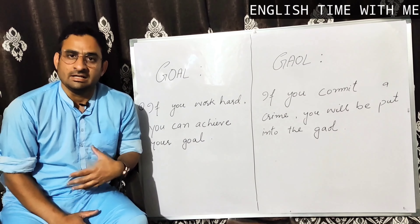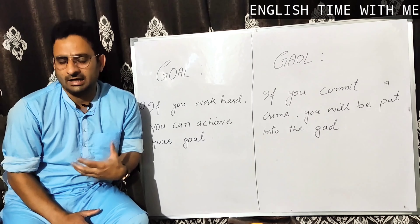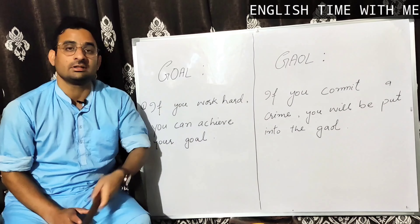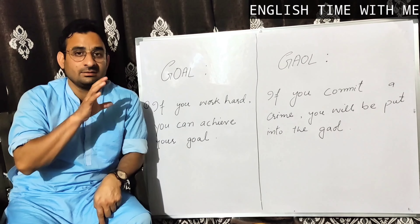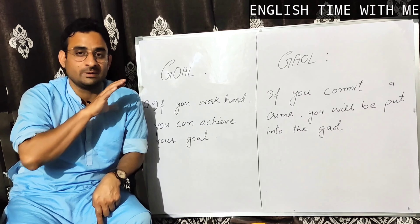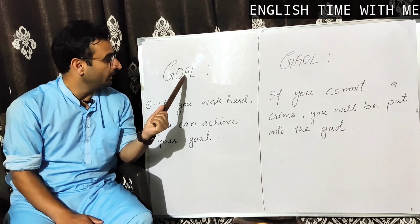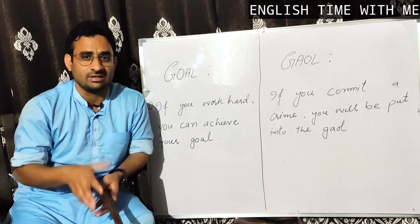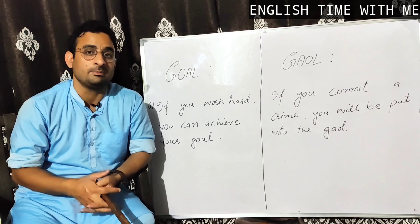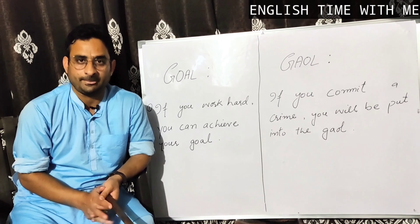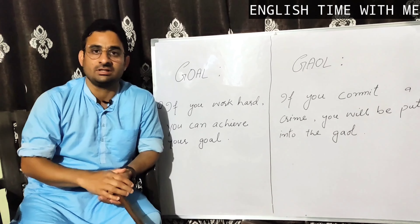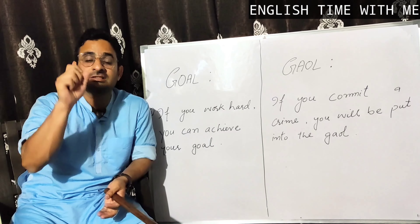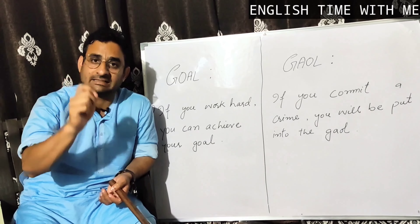You can see there are two words written on the board. They look very similar, but if you observe them minutely, there is a difference in spellings. This one is G-O-A-L, goal, and this one is G-A-O-L. One aspect of using beautiful language is the choice of your words and a beautiful accent and pronunciation.